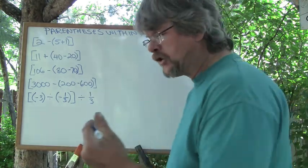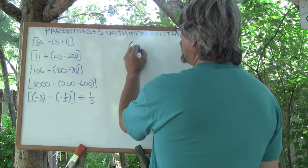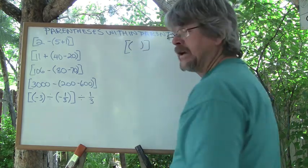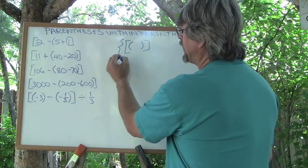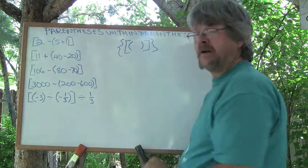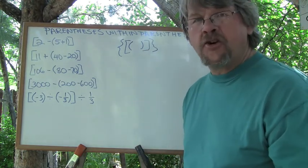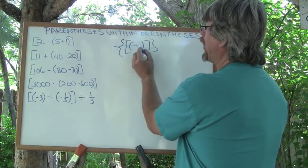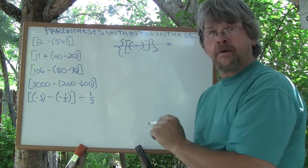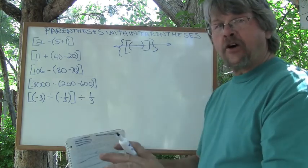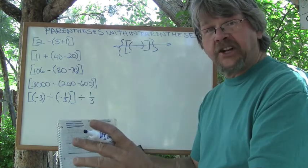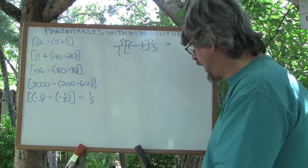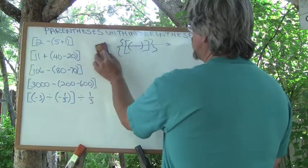The key to doing brackets, parenthesis within brackets, and then we also have braces, the key is to start at the innermost grouping. Start here and work your way out. Begin with the innermost and solve it, and then go to the next innermost bracket and solve it. That's the key to doing this.